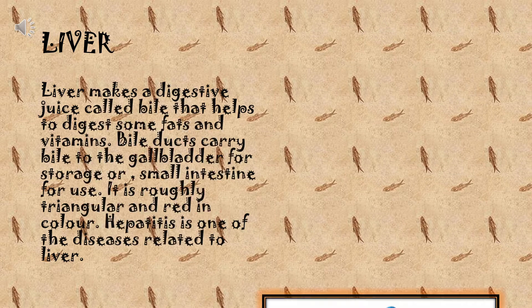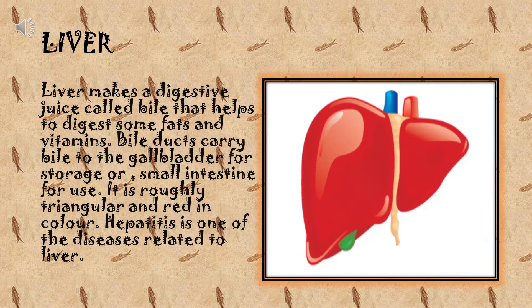Liver. The liver makes a digestive juice called bile that helps to digest some fats and vitamins. Bile ducts carry bile to the gallbladder for storage or to the small intestine for use. The liver is roughly triangular and red in color. Hepatitis is one of the diseases related to the liver.